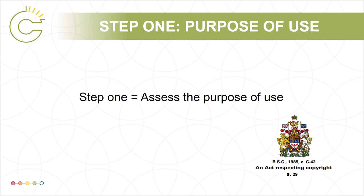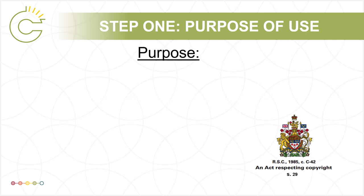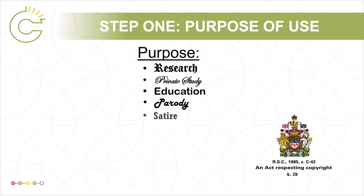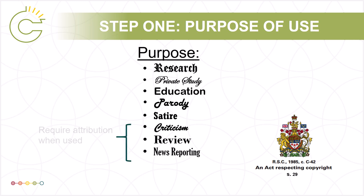Section 29 of the Copyright Act lists five purposes: research, private study, education, parody, and satire. The use of copyright protected material for any of these purposes will not infringe copyright if the use is accepted by the rights holder or determined by a court of law to be fair. The Act identifies three additional purposes: criticism or review, and news reporting. These are separated from the initial five because they carry the additional requirement of including proper attribution when used.